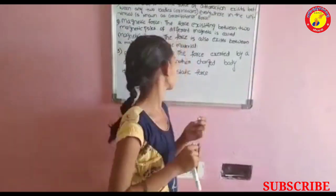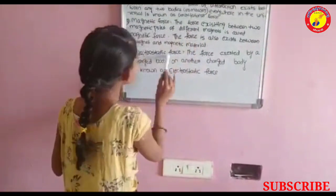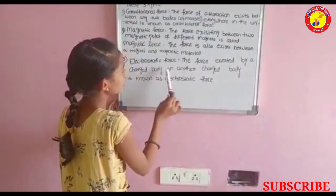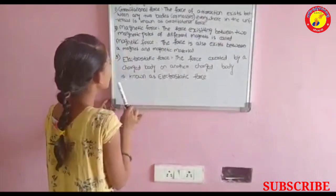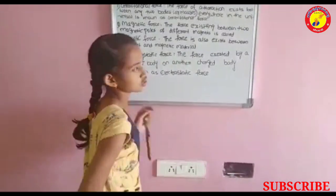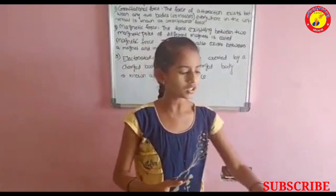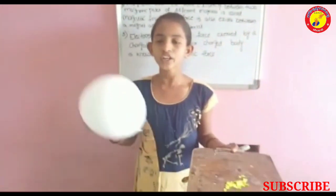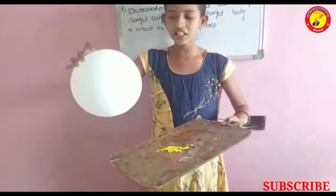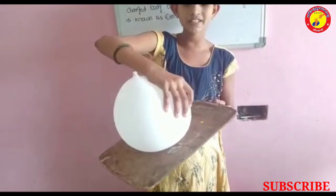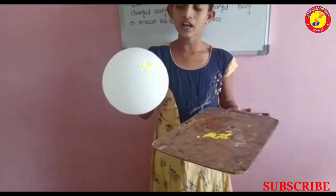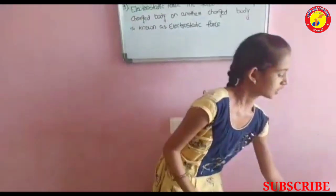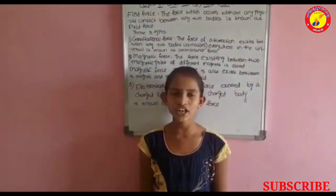The third one is electrostatic force. The force exerted by a charged body on another charged body is known as electrostatic force. Now I will show you an example. See, I took a balloon and paper pieces. If I rub the balloon and bring it near the paper pieces, the balloon attracts the paper pieces. This is the example of electrostatic force.